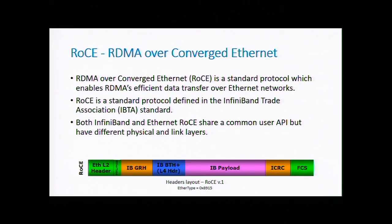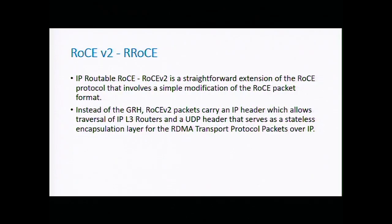Here is the header layout of the RoCE protocol. The InfiniBand components are encapsulated inside an Ethernet header. The EtherType indicates the next packet is IBGRH — InfiniBand Global Routing Header — which contains layer 3 addresses. The next header is IBBTH, the InfiniBand Base Transport Header, which is the layer 4 header. The main problem with RoCE V1 is that it's limited to its domain — it's not routable. Hence RoCE V2 was introduced to allow routing between different subnets.